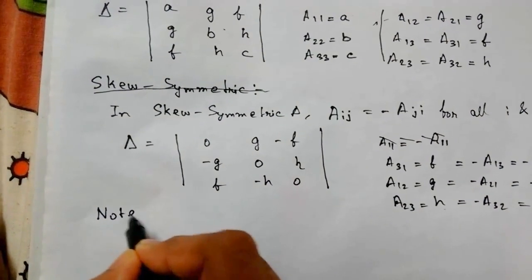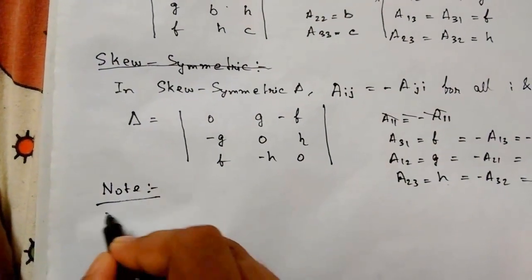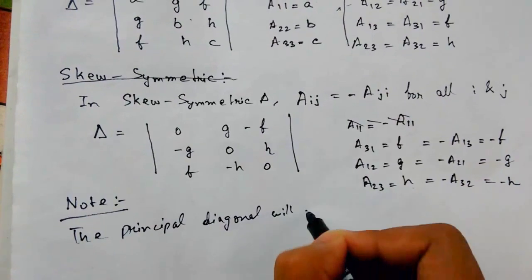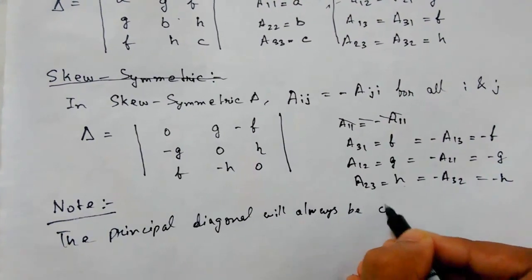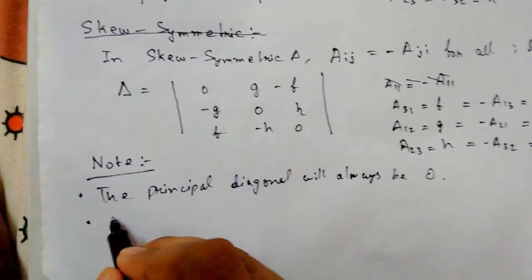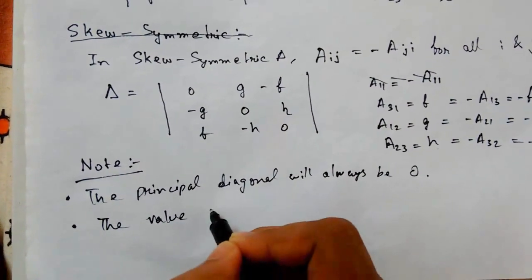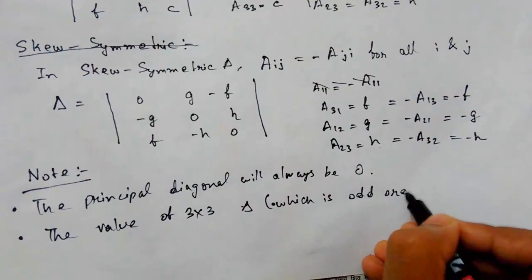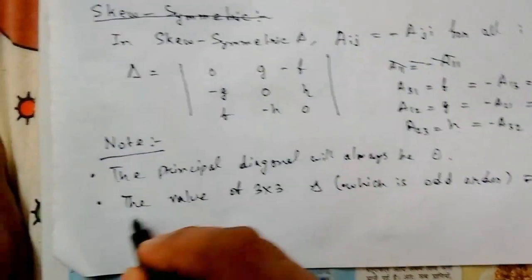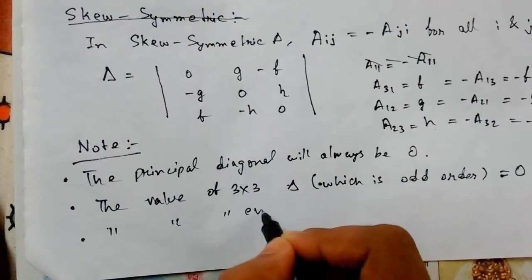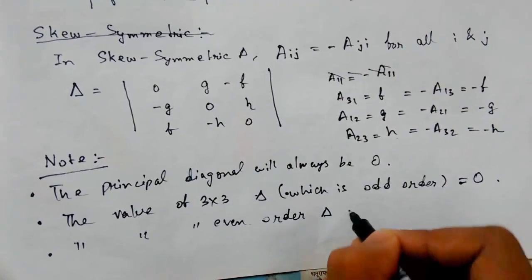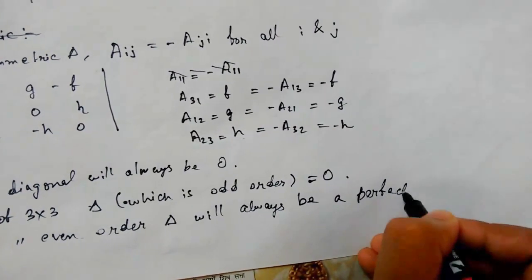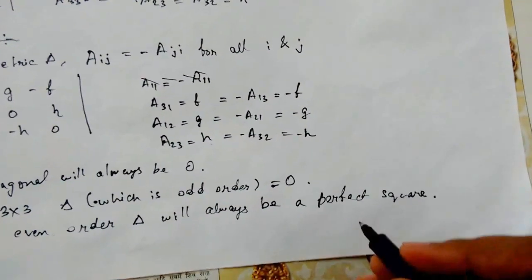There are some key points to remember. Note: in a skew-symmetric determinant, the principal diagonal will always be zero. This is our first point. Second point: the value of a third-order determinant, which is an odd order, will always be zero. And the value of an even-order determinant will always be a perfect square.